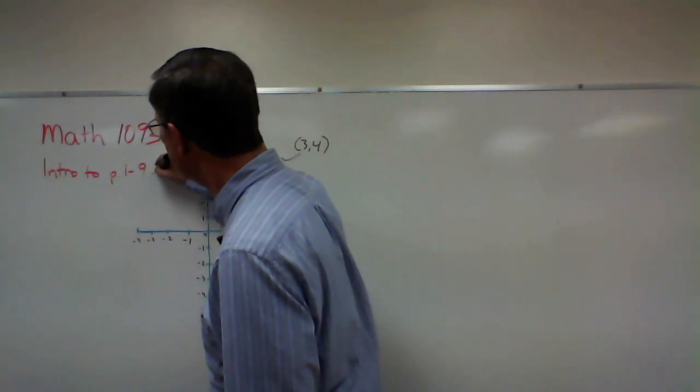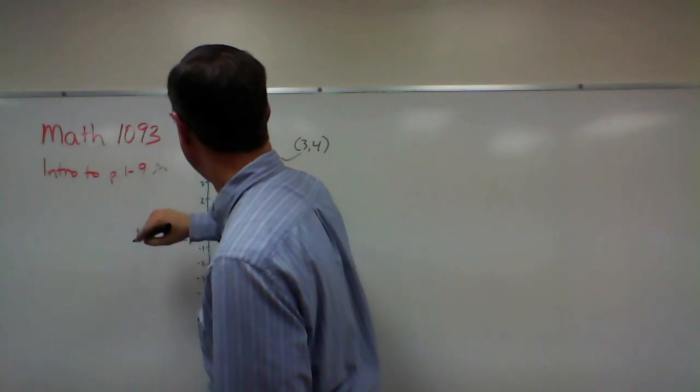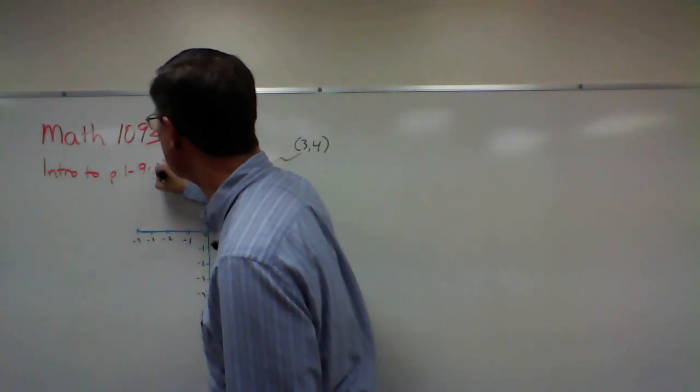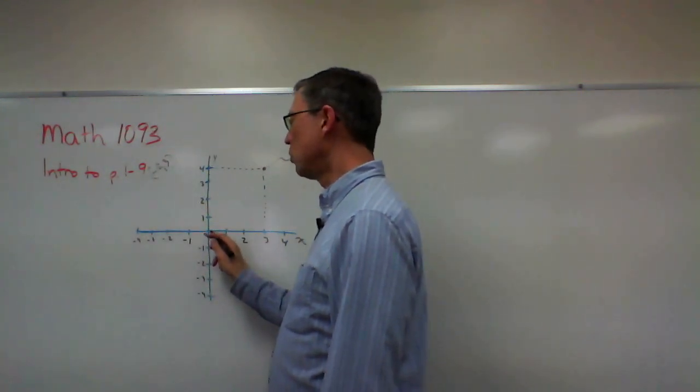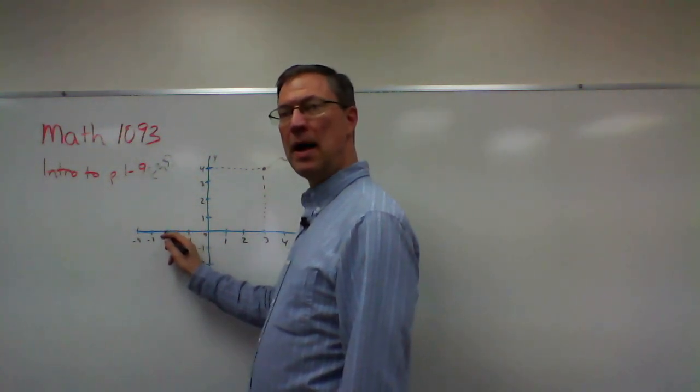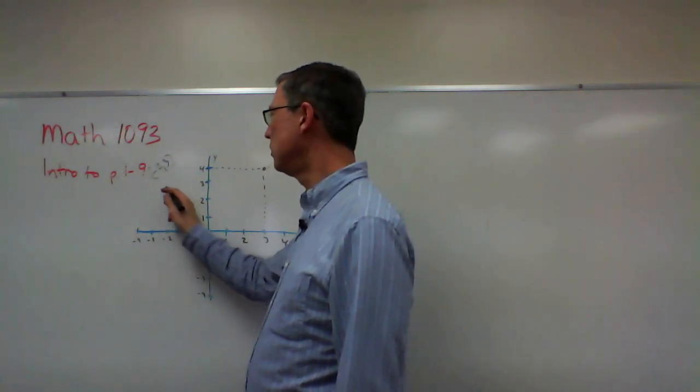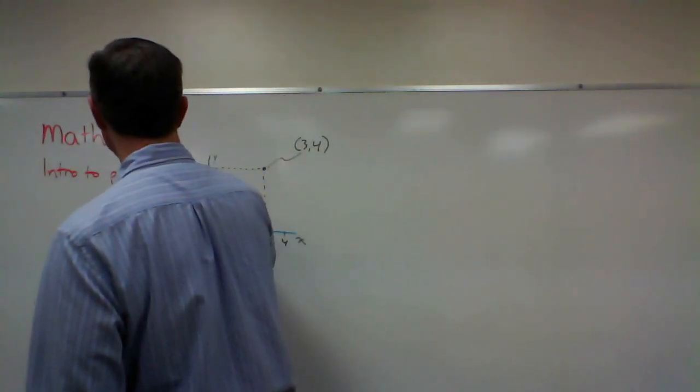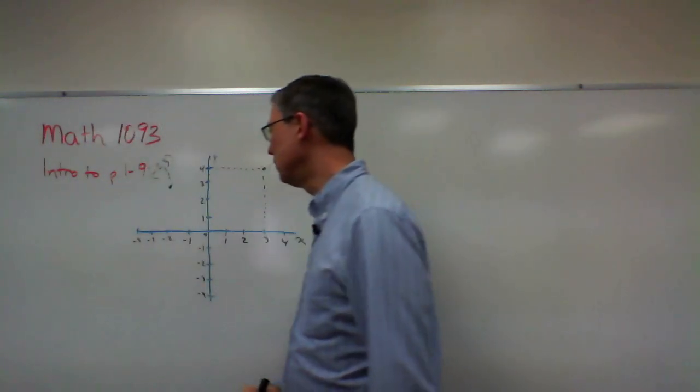Let's find the point negative 2 3. So we crawl but we're crawling backwards to negative 2 and then I'm going to stand up to 3. So this would be the point right here negative 2 3.